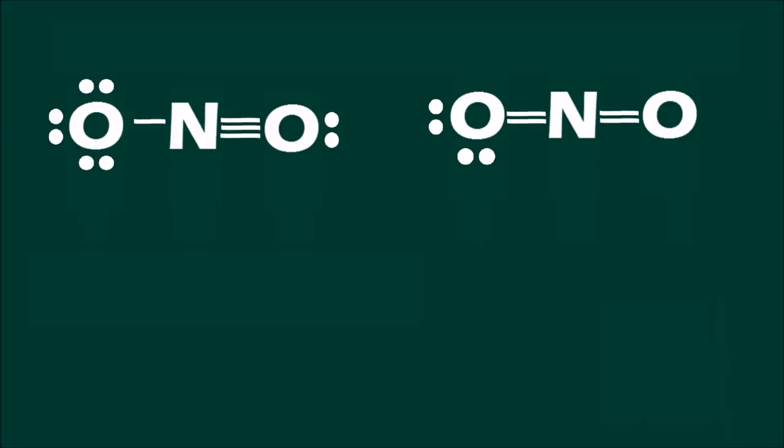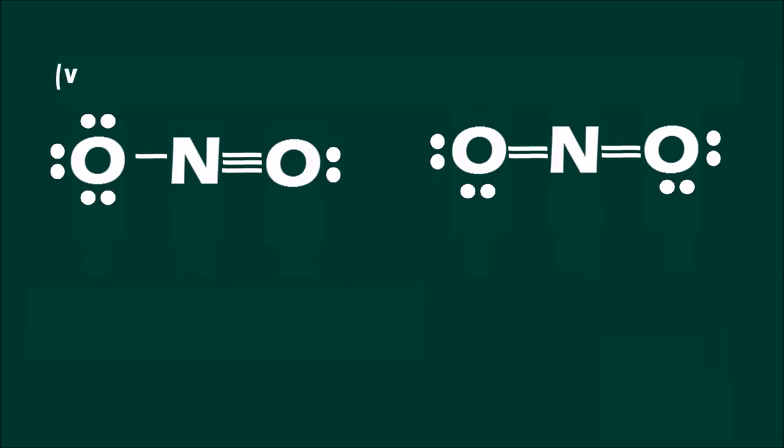The formula for formal charge is the number of valence electrons minus one half of the bonding electrons minus the lone electrons.